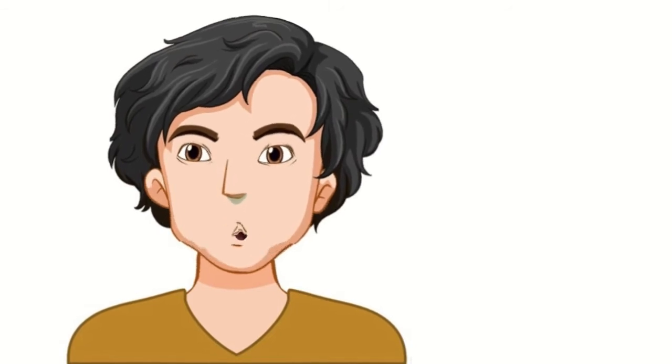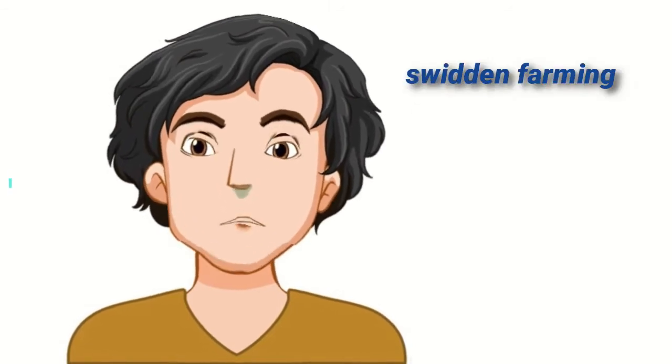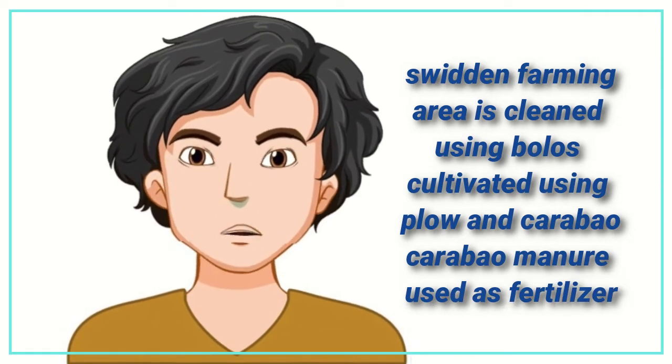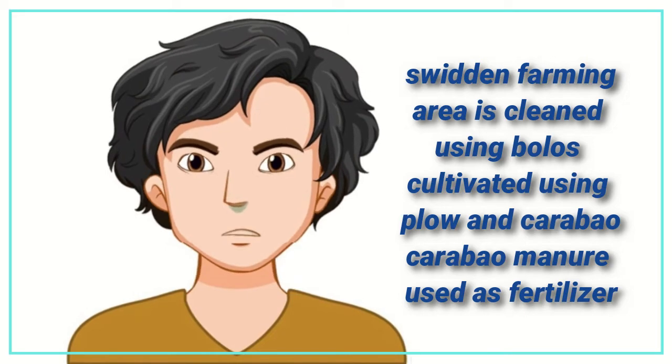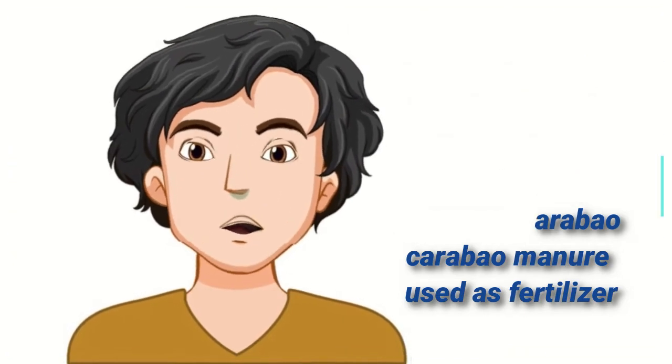Those who live in upland areas practice swidden farming. After burning, the area is cleaned using bolos and cultivated using plow and carabao. Carabao manure is used as fertilizer.